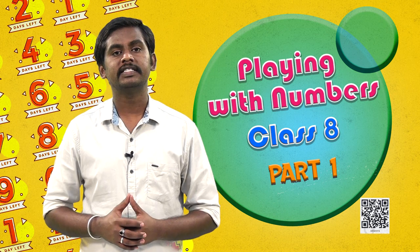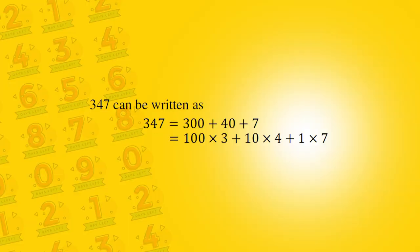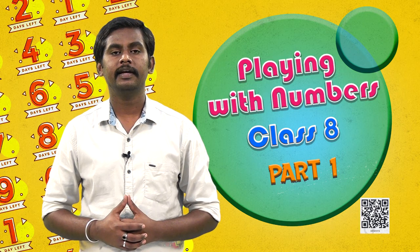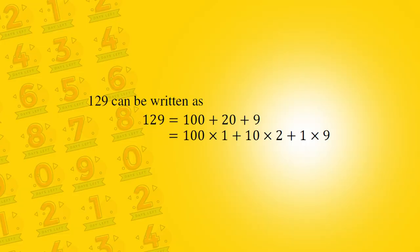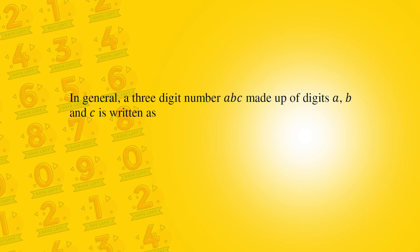Students, now let us try to understand the same thing for a three-digit number. Look at the number 347 and it can be written as 347 is equal to 300 plus 40 plus 7, that is equal to 100 times 3 plus 10 times 4 plus 1 times 7. Similarly, the number 129 can be written as 100 times 1 plus 10 times 2 plus 1 times 9. In general, a three-digit number ABC made of the digits A, B and C can be written as ABC is equal to 100 times A plus 10 times B plus 1 times C.